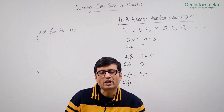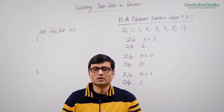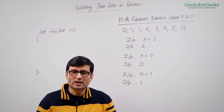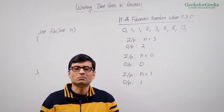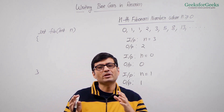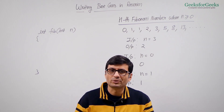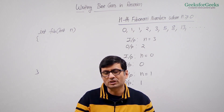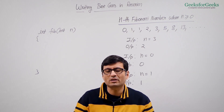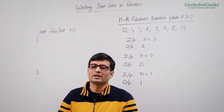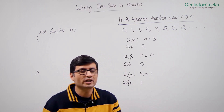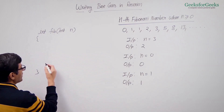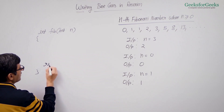Let us now talk about the nth Fibonacci problem. We can easily guess that the nth Fibonacci number can be recursively computed as the sum of the (n minus 1)th Fibonacci number and the (n minus 2)th Fibonacci number. So we return Fibonacci(n minus 1) plus Fibonacci(n minus 2).